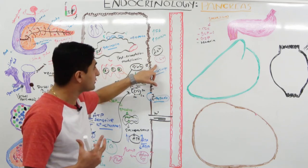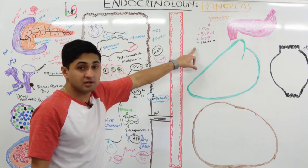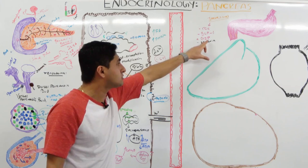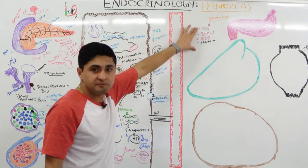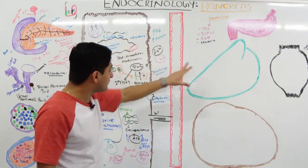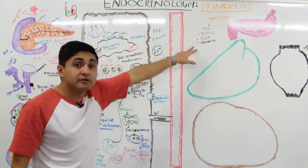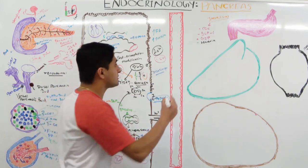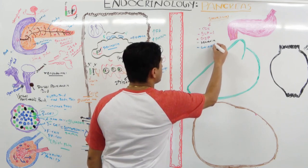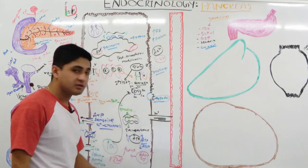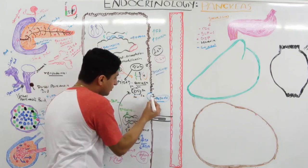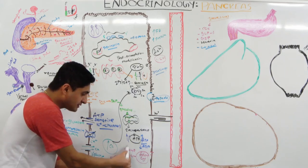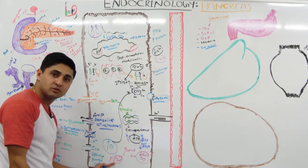To summarize stimulatory factors: neuronal input via acetylcholine from the vagus nerve; incretins like CCK, GLP-1, GIP, and secretin; and stress hormones like cortisol, which act through the Gs pathway, raising cyclic AMP and activating protein kinase A. Epinephrine binding to beta-2 adrenergic receptors also stimulates insulin secretion.